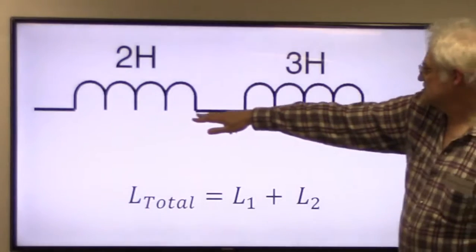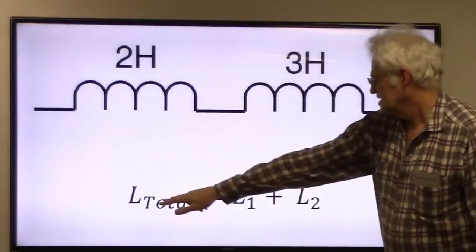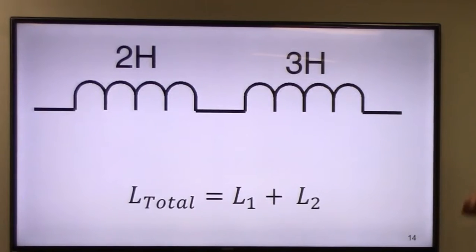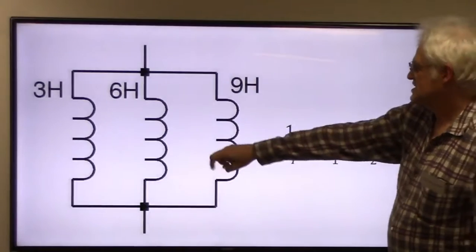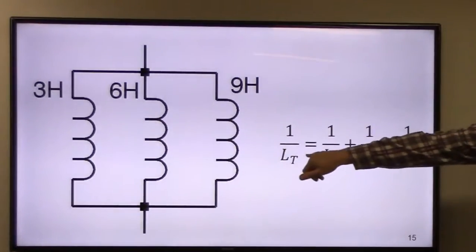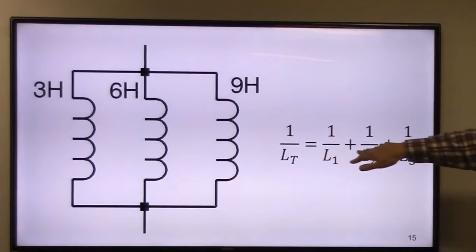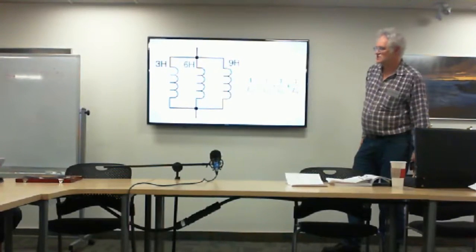Inductors in series follow the same rules as resistors — it makes it nice and simple. Two inductors, say a two-henry and a three-henry in series, you simply add them up: the result is five henries. Likewise, inductors in parallel use the same inverse formula as resistors in parallel.